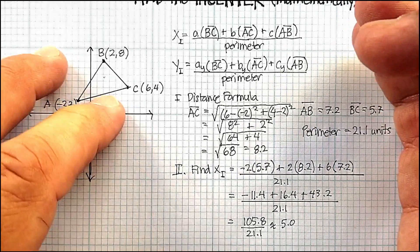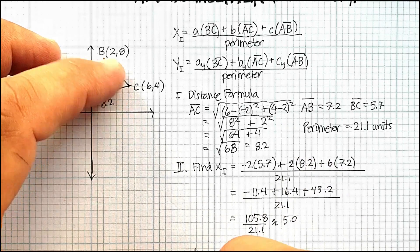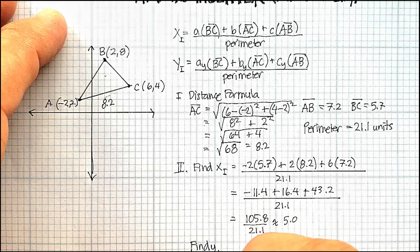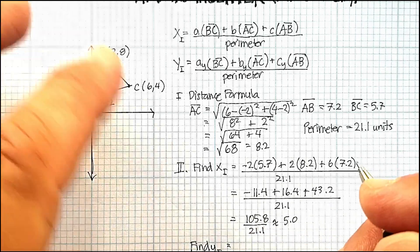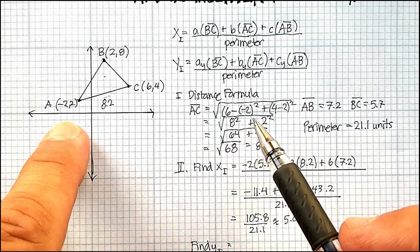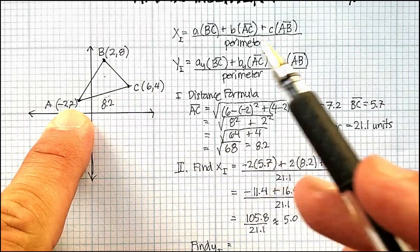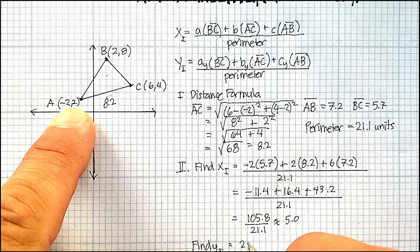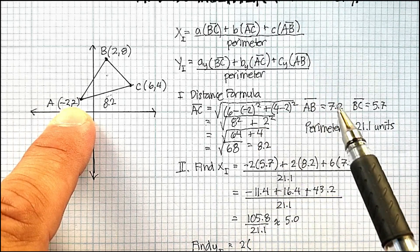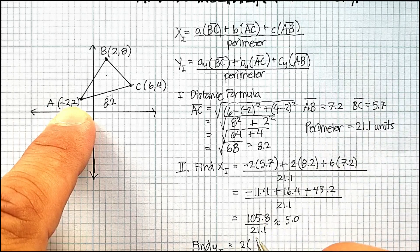Now, let's find the y value. The y of the incenter. And I'm going to tell you that after I did all my calculations, so 2 times this opposite side, 2 times BC, and what did I come up with? So BC was 5.7.